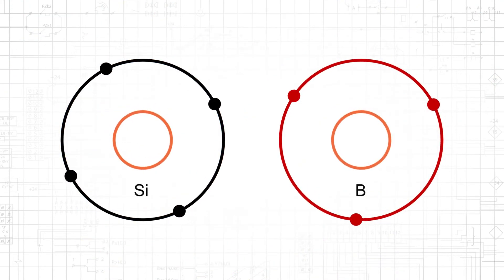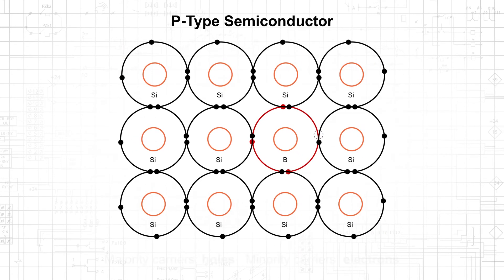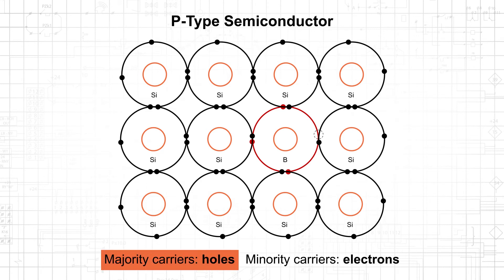If, on the other hand, we dope with a group 3 element, such as boron, each doping atom will introduce an additional hole. This turns the silicon into a p-type semiconductor. Holes outnumber free electrons, and current flow will be due primarily to the movement of positive charges. Thus, in a p-type semiconductor, holes are the majority carriers, and electrons are the minority carriers.